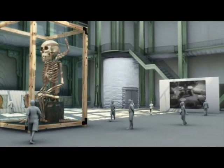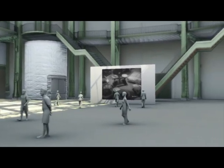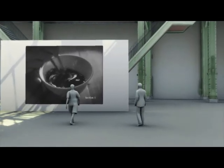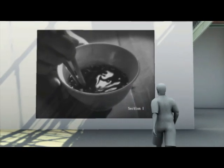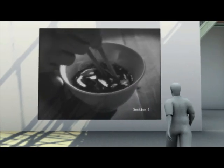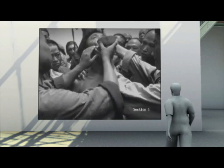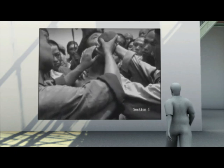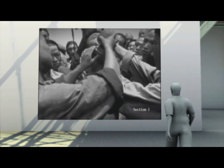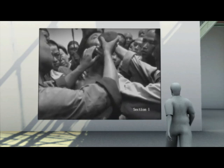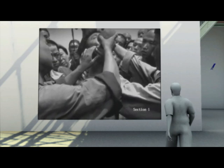Chen Dieren's silent video, Ling Chi, Echoes from a Historical Photograph, is based on a historical photo taken in 1905 by a French soldier. The photo had been made known in the West by Georges Bataille. The image shows the execution of a man in early 20th century China by the execution method Ling Chi. The victim, drugged with opium, dies through slow mutilation with a knife.